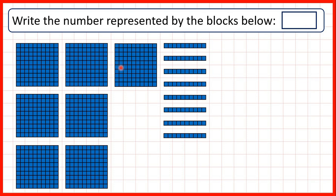Here we can see that we have seven hundreds, so that's seven as our hundreds digit. We have eight tens, so we write eight as our tens digit. But here we don't have any ones, and it's really important that we write a zero as our ones digit to show that we don't have any ones. That way we've written the number seven hundred and eighty. If we didn't have this zero, we would have written seventy-eight, but that would show seven tens and eight ones. So we need this zero as a placeholder to show that this seven represents seven hundreds and this eight represents eight tens.